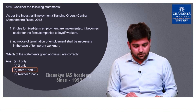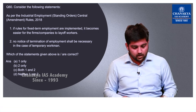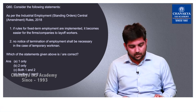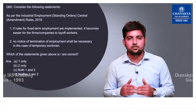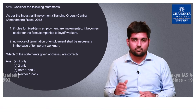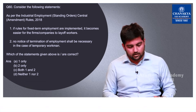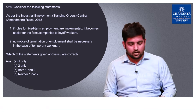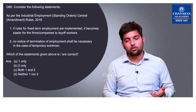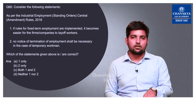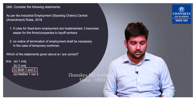Question number 60 pertains to the Industrial Employment Standing Orders Central Amendment Rules 2018 regarding fixed-term employment. The first statement — that it becomes easier for firms to lay off workers — is correct, because if the term is fixed, say 3 months, the owner can terminate the worker without legal consequences. The second statement — that no notice of termination is necessary for temporary workmen — is also an important provision under these orders. Both statements are directly linked to ease of doing business. So the correct option is C — both 1 and 2 are right.